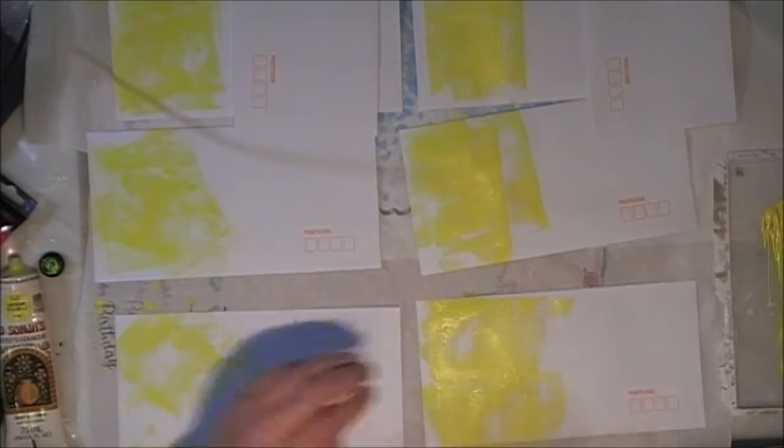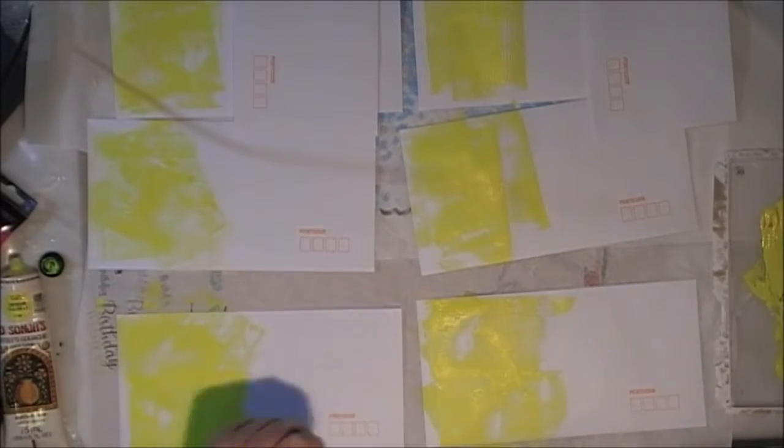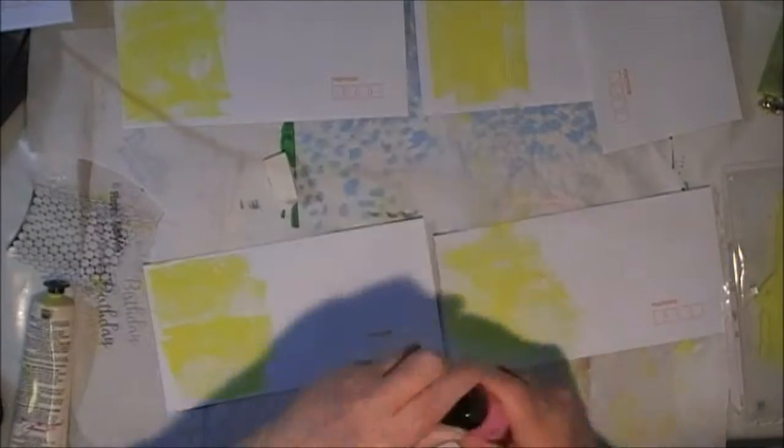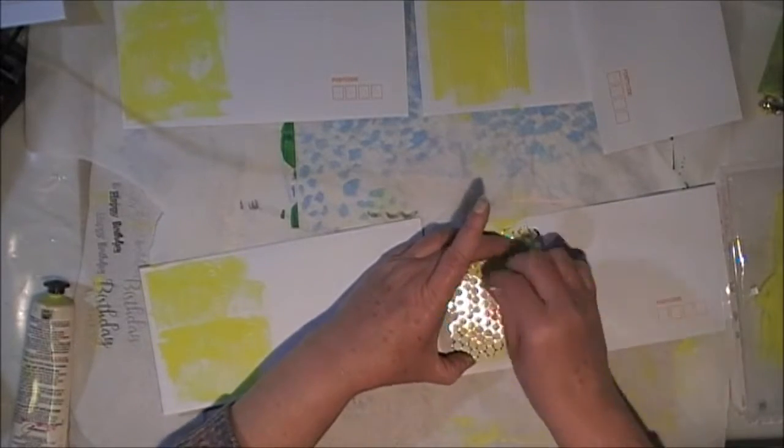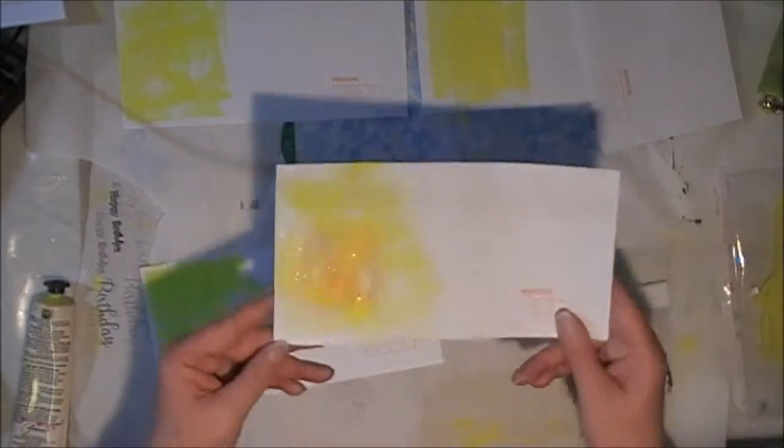So as you can see, I was just using a roller or a brayer with some yellow paint and I just roughly rolled onto the side of the envelope.